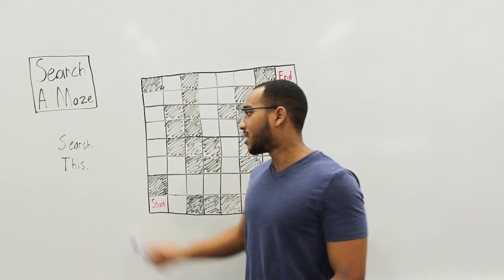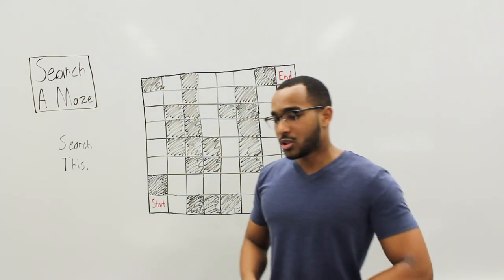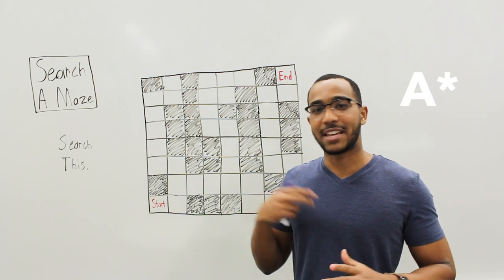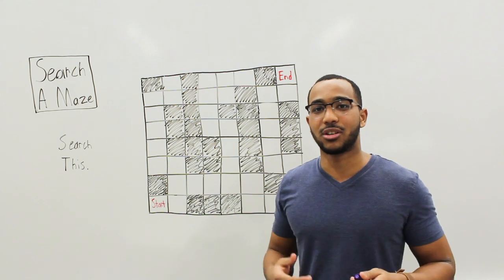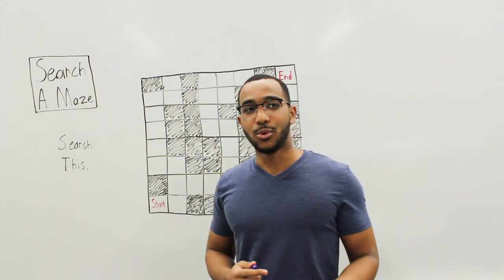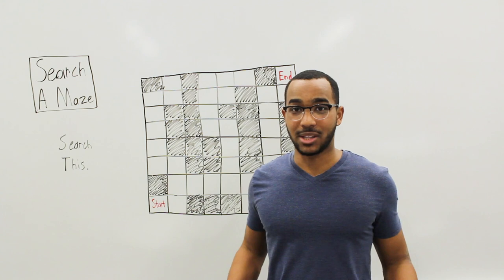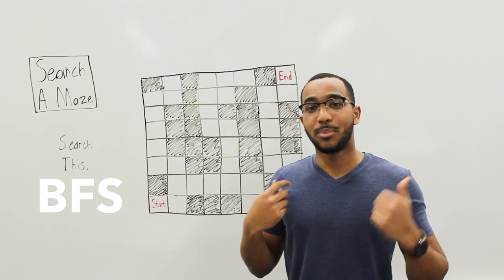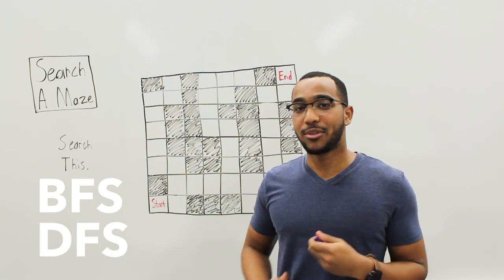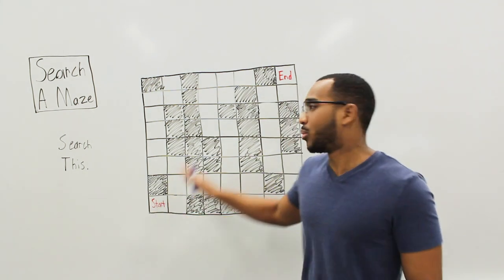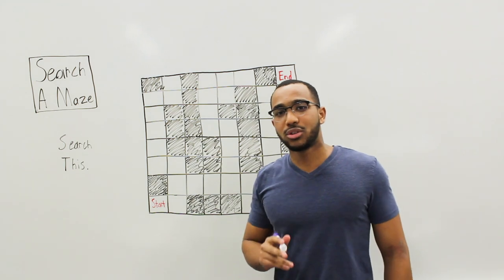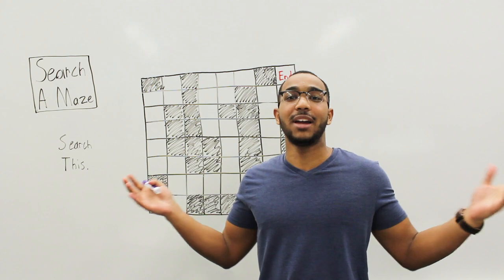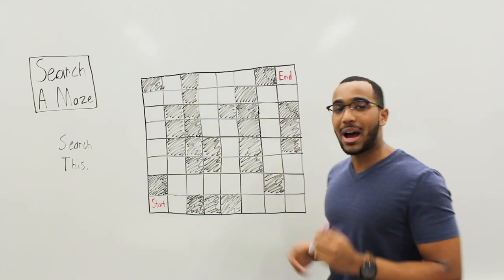Our interviewer says: write me an algorithm to search this maze. In an interview, you're not going to need difficult algorithms like A-star that work off heuristics. You're going to work from your fundamentals. The fundamental graph searching algorithms are breadth-first search and depth-first search. We're given a start, given an end, and told to find a path — not necessarily the shortest path, just a path.